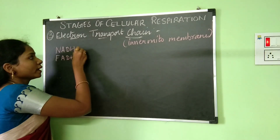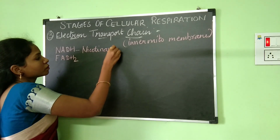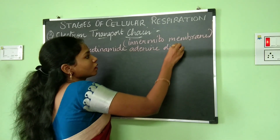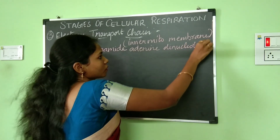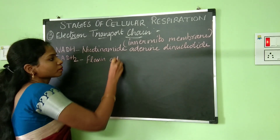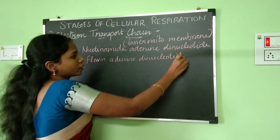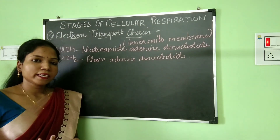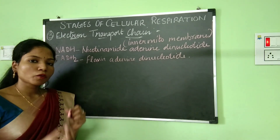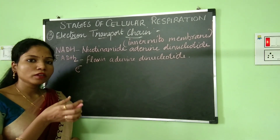NADH is nicotinamide adenine dinucleotide. And FADH2 is flavin adenine dinucleotide. These two compounds are important because they are going to produce or donate the electrons for the electron transport chain to begin.